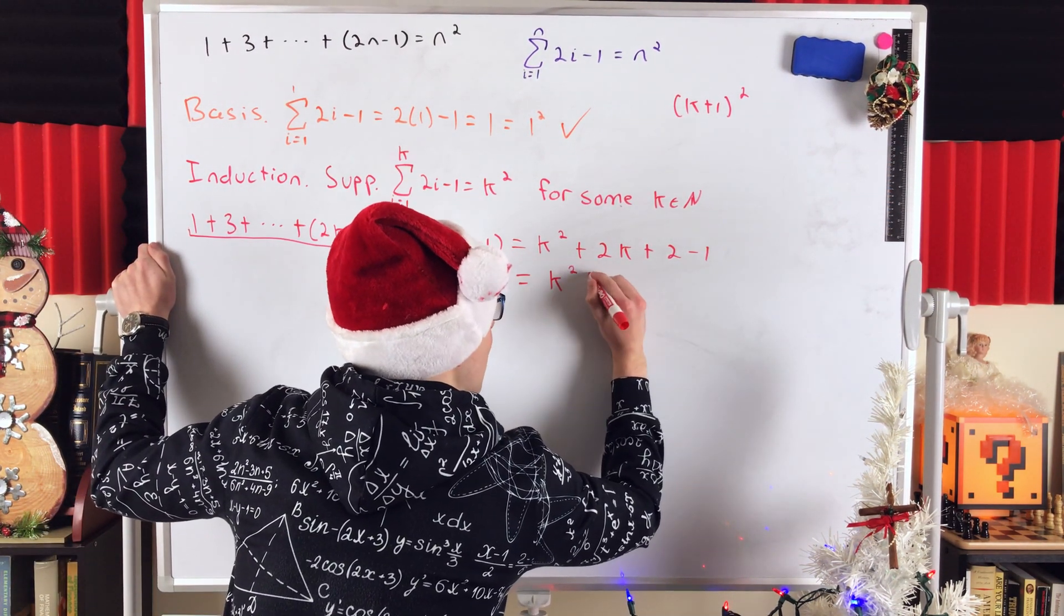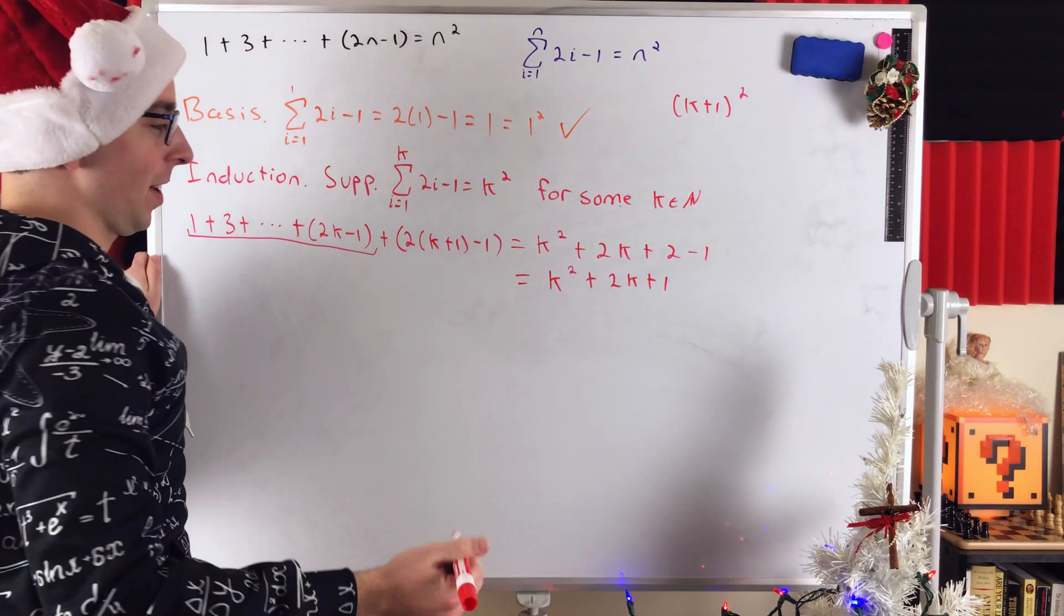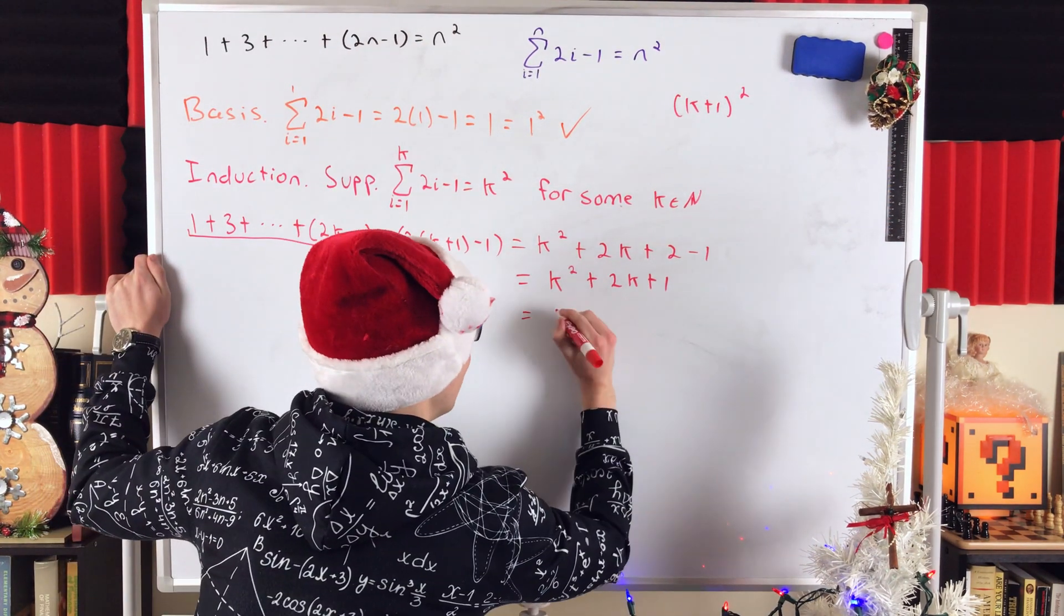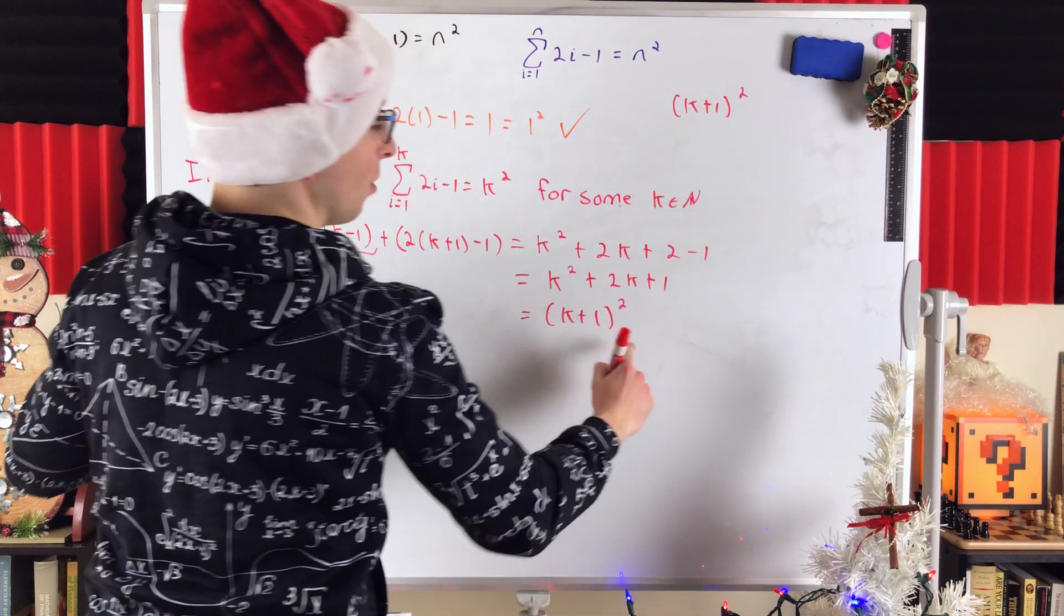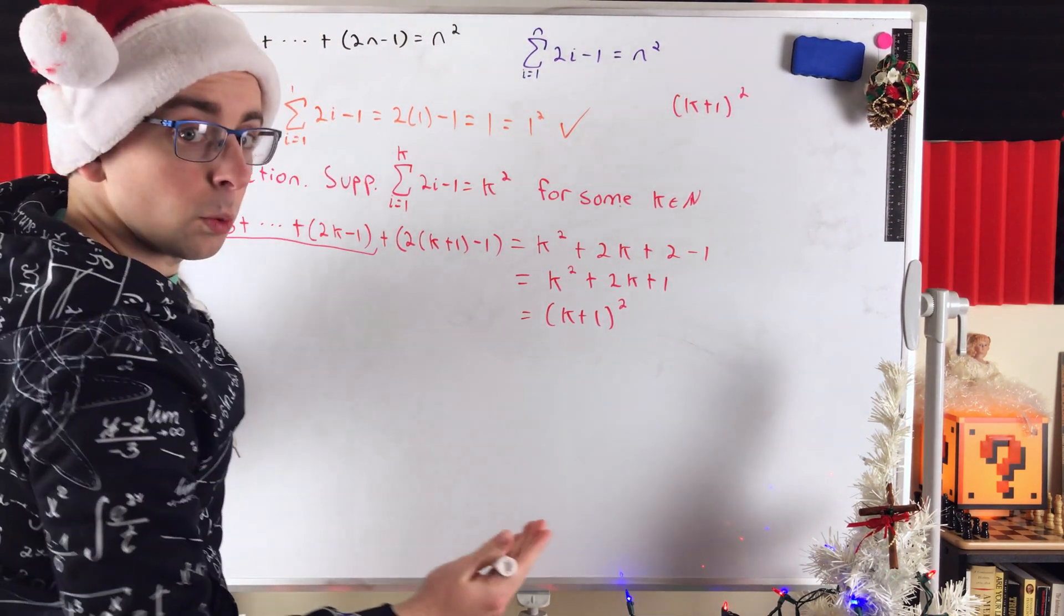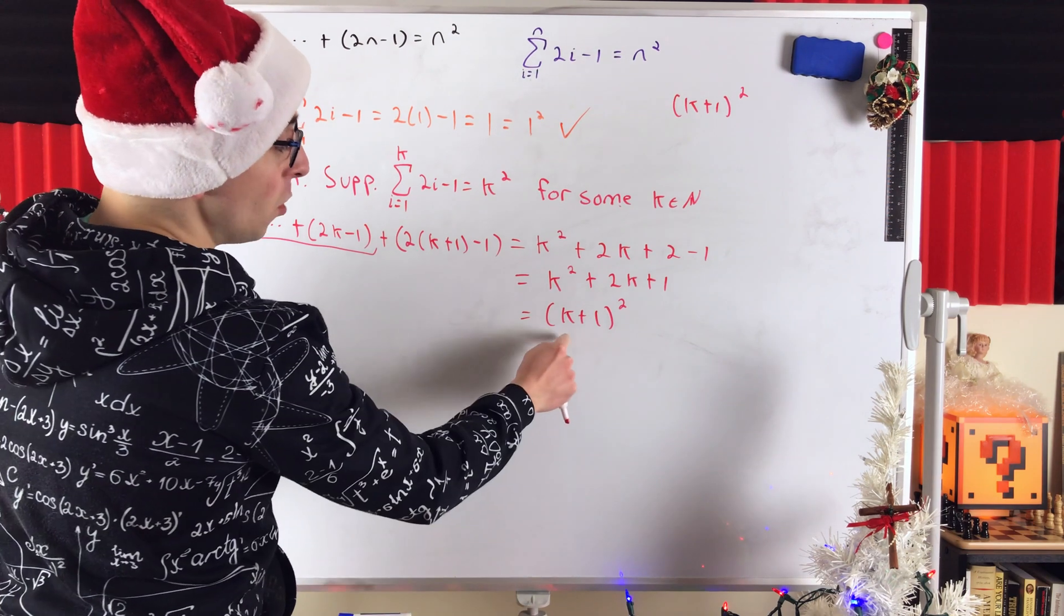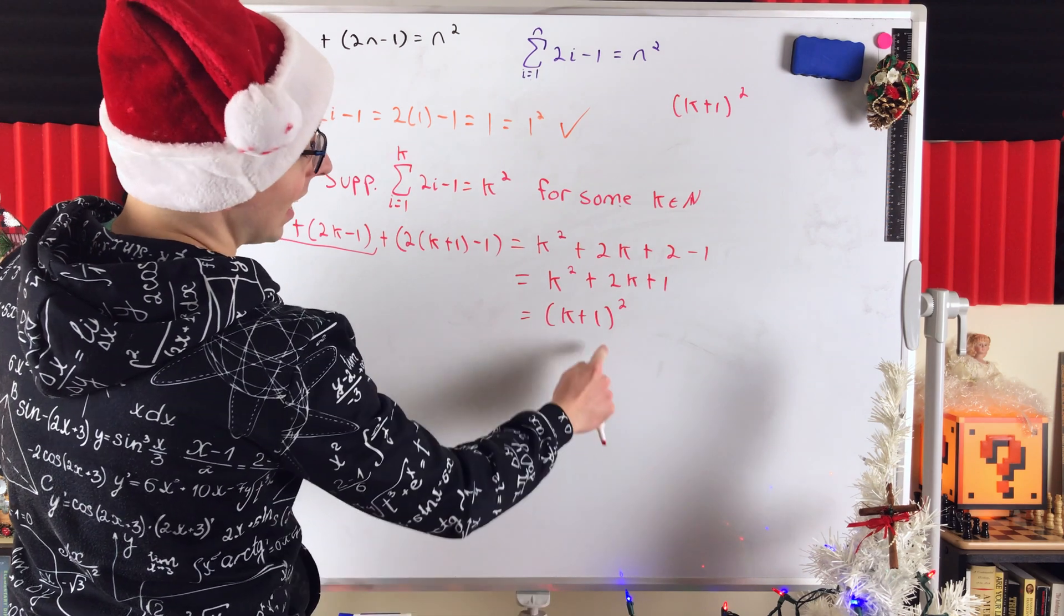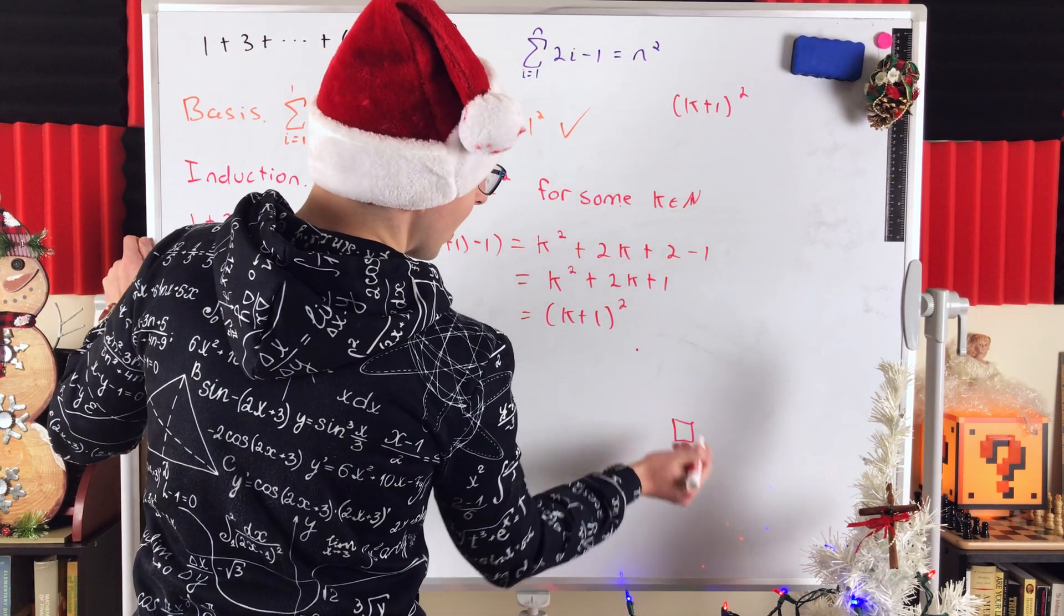We see we've got k squared plus 2k plus 1. What does that look like? Well, I'm sure most of us see stuff like this all the time. This is equal to k plus 1 squared, k plus 1 times k plus 1. Because if you square k plus 1, what do you get? You get k times k, which is k squared. You get k times 1 plus 1 times k, which is 2k. And you get 1 times 1, which is 1. And that's the proof.